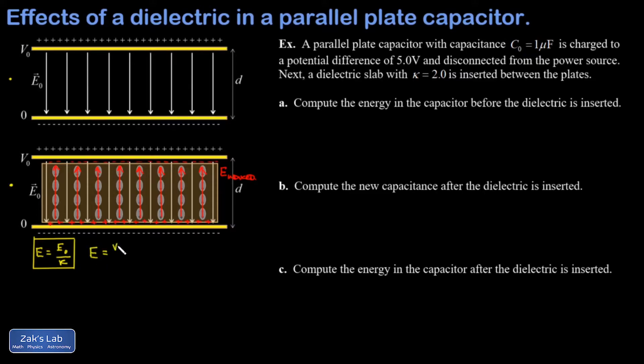field between the plates of a capacitor is given by potential difference over the gap between the plates. And I can say the original potential difference is related to the original electric field by V naught equals E naught times d. What about my new potential? It's going to be the new electric field times d, but that's E naught over kappa times d.